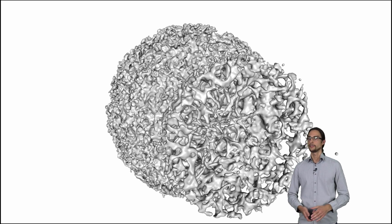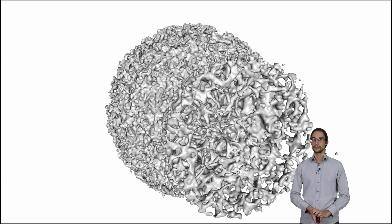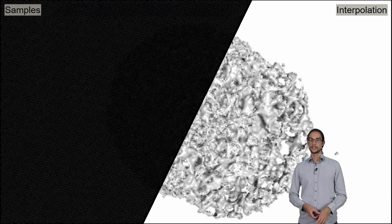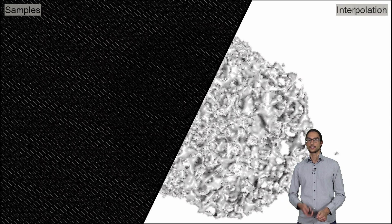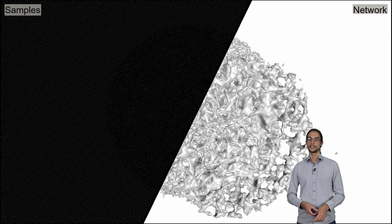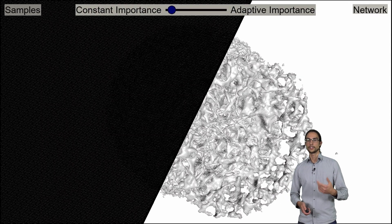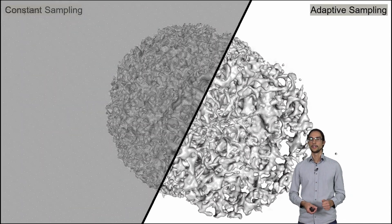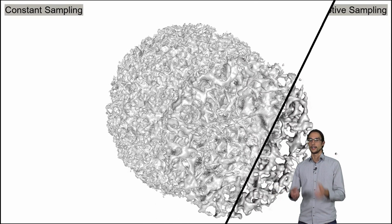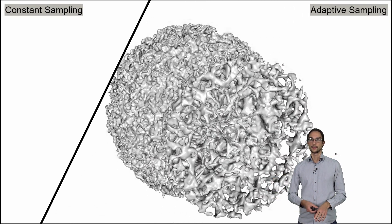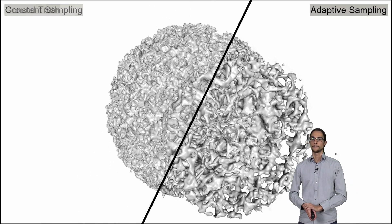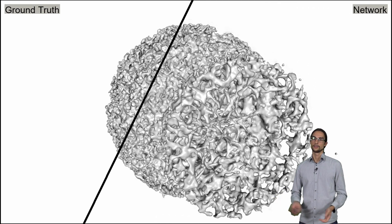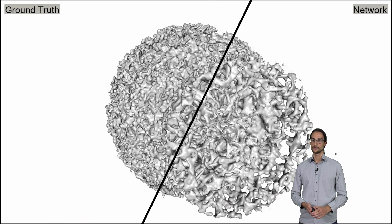Isosurface rendering can be made fairly efficient, but there are still some scenarios where the sample count has to be reduced. This drastically decreases the reconstruction quality. In recent years, neural networks were able to retain some of the quality. However, we can achieve much better qualities by wisely choosing the position of the samples. Here you see a difference between adaptive sample positions and constant stepping, and with this adaptive sampling scheme we achieve almost identical results to the ground truth with a fairly low number of samples.